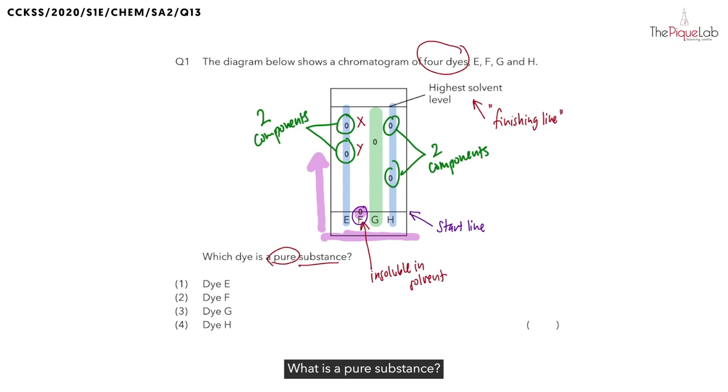What is a pure substance? That means that it is only made up of one component. Can it be mixed with other substances if it is pure? No, it should not be mixed with other substances. So how many dots should I see in my chromatogram? I should be looking for one dot only that has moved up the solvent.